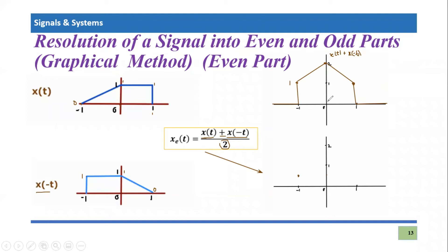At t = 0, the amplitude is two, and two divided by two becomes simply one. At t = 1, the amplitude is one, and one divided by two is again half. Connecting these points gives us the graph of the even part. After t = 1 it is zero, and before t = -1 it is also zero. That is how you resolve a signal into its even part — add x(t) and x(-t), then divide by two graphically.